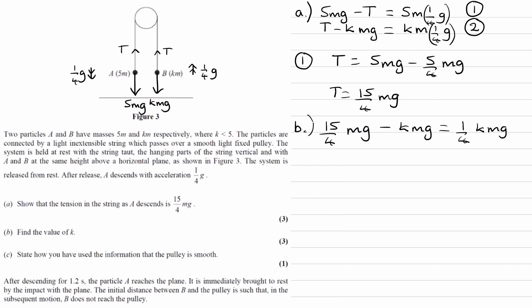We lose an mg from each term. This then becomes 15/4 minus k is equal to 1/4 k. And then I'm going to times the entire equation by 4. So 15 minus 4k is equal to k. Bring the 4k over. We get 5k is equal to 15. And k will then be equal to 3.